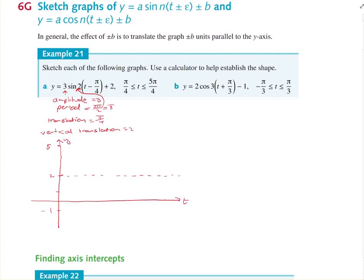Marking the t-axis. This is a sine graph; the period is pi. Looking at the domain going to 5 pi on 4 — break the period into 4 pieces: half of pi is pi on 2, half of that is pi on 4. So we count: pi on 4, 2 pi on 4, 3 pi on 4, 4 pi on 4, 5 pi on 4. Our normal graph would start from 0, but this one has a translation of pi on 4, so it starts from pi on 4. The centre is not on 0 anymore — it starts at pi on 4 and follows the sine pattern: up, back to the middle, down to the minimum, then back to the middle. Draw in the shape.